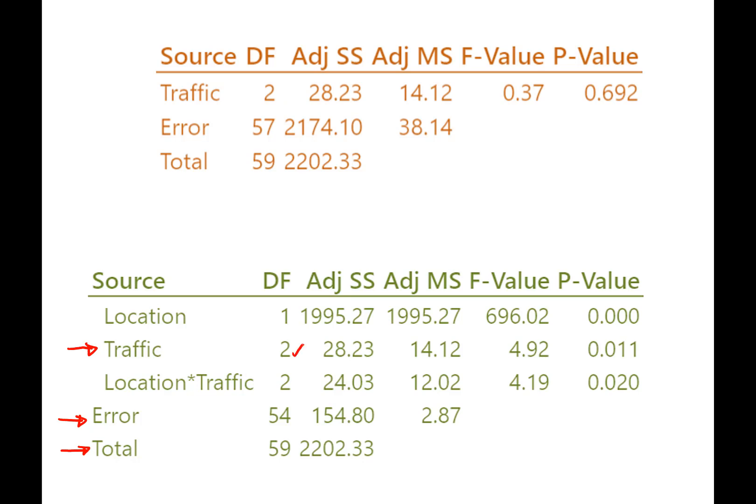Yep. Two degrees of freedom because we have three levels of traffic. How spread out, how much of the spread or dispersion can we assign to traffic? Yep. Same amount as in the single factor ANOVA. And over here, yep, per degree of freedom, that's the same. Then we get over to the F value and those are not the same anymore. Okay. I think we're getting to what the difference is.